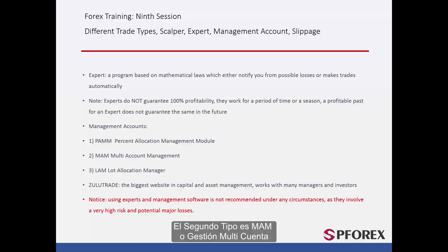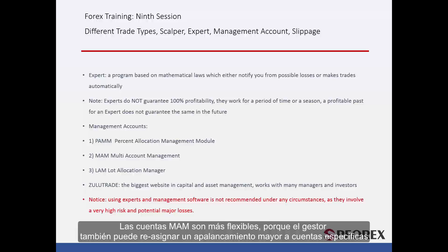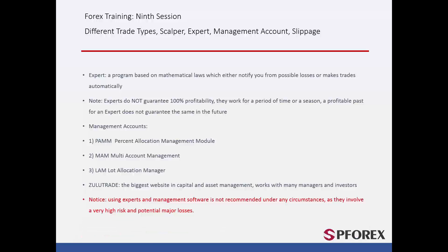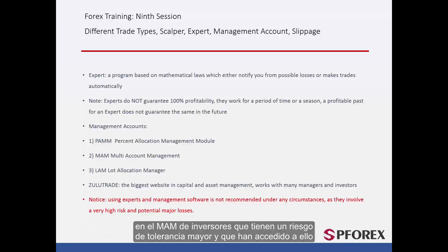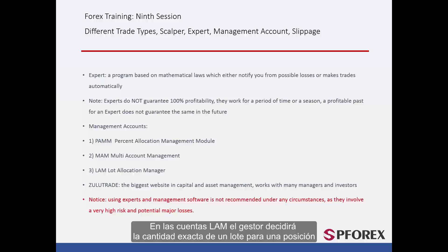The second type is MAM, or Multi Account Management. MAM accounts are more flexible because the manager can also reassign a higher leverage to specific accounts from investors who have a higher risk tolerance and have agreed to it. The third type is LAM, or Lot Allocate Manager. In LAM accounts, the manager will decide the precise amount of a lot for a position.